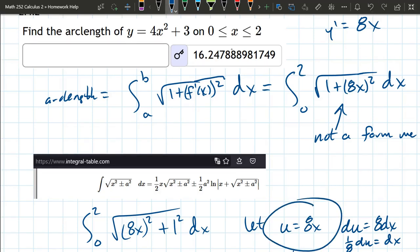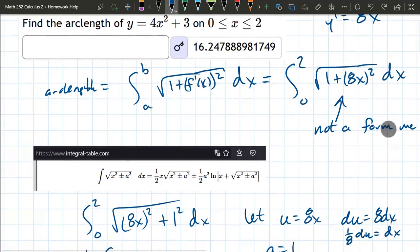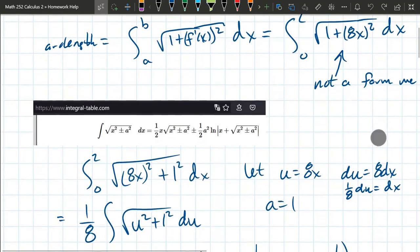u is 8x. Derivative is 8dx. So you have to solve for dx. So multiply both sides by an eighth. Make that u substitution.